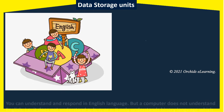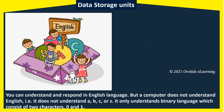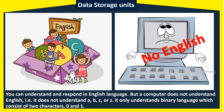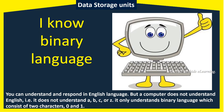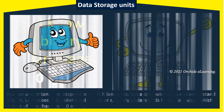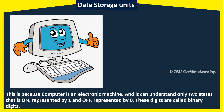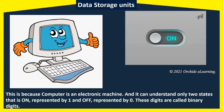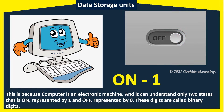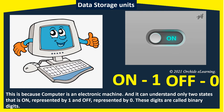We can understand and respond in the English language. But a computer does not understand English — it does not understand A, B, C, or Z. It only understands binary language, which consists of two characters: zero and one. This is because the computer is an electronic machine and it can understand only two states — ON, represented by 1, and OFF, represented by 0. These digits are called binary digits.